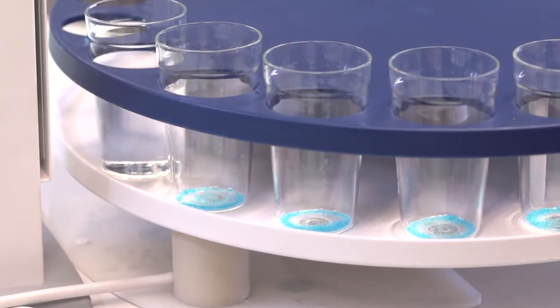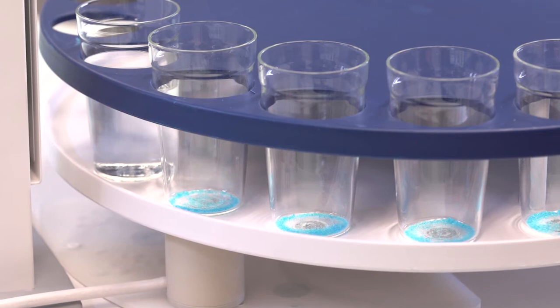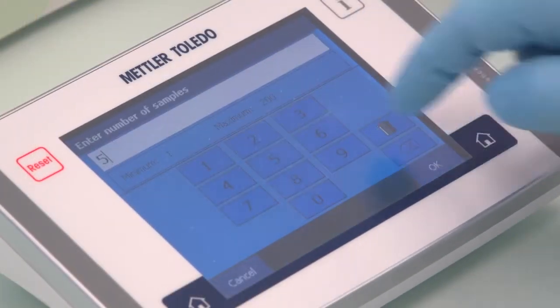Once all samples are weighed, place them on the in-motion auto sampler in any order. Select your method of analysis, start position, and number of samples for efficient titrations.